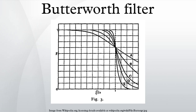The Butterworth filter is a type of signal processing filter designed to have as flat a frequency response as possible in the pass band. It is also referred to as a maximally flat magnitude filter.